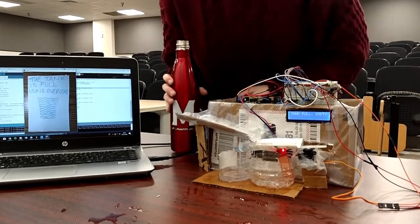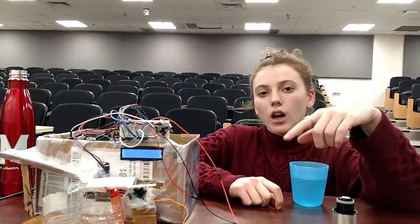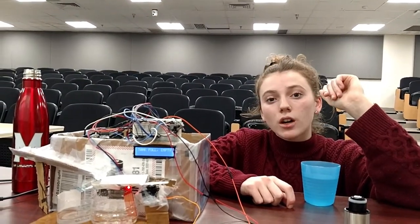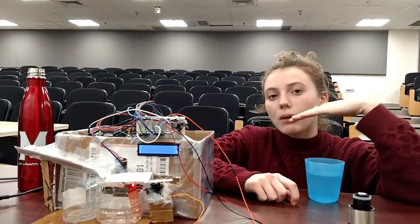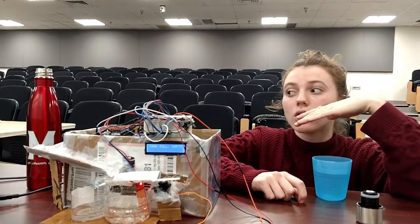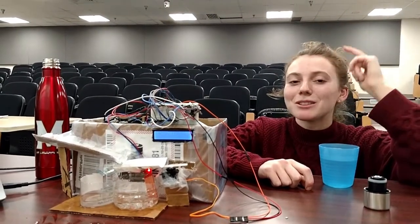Now for instance, you can obviously see that the tank isn't full. However, the water sensor that we are using is very sensitive, and so little amounts of water will trigger it to go up by about 50 volts. So you have to be really careful, and the programming took a lot of time to be able to get the voltages and different levels.